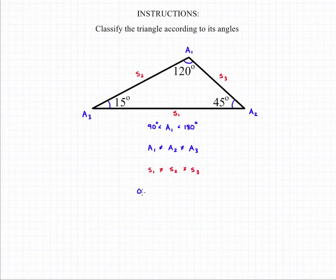So we take all this information together. The first part tells us we're dealing with an obtuse triangle. It has an angle in it which is between 90 and 180 degrees.